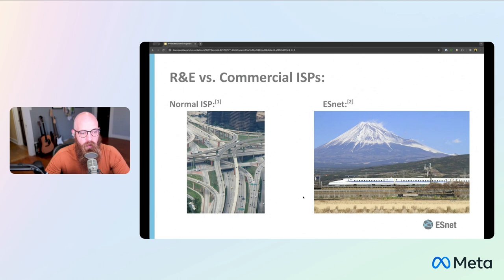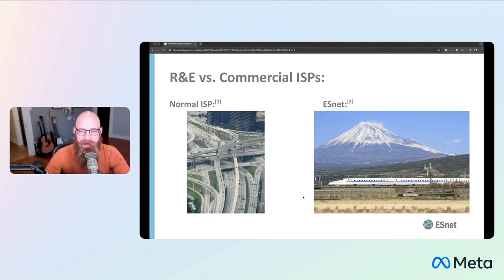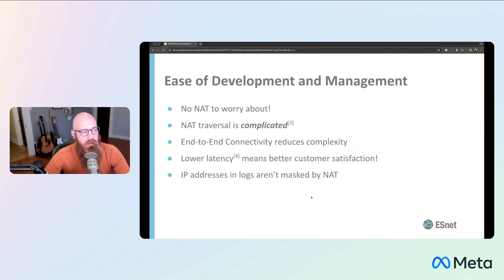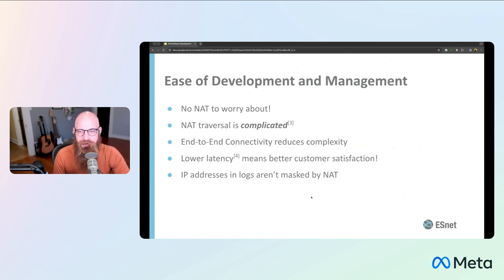Because of our purpose-built network, it's a little easier for us to deploy IPv6, which is why we have decades of experience with V6. So how can V6 help you? The first theme I found was that it really eases — it makes it a little easier to develop and manage your applications and your networks. I actually have been a network engineer for a long time, but now I write automation software, so I'll probably switch into talking about network management because it is still a passion of mine.